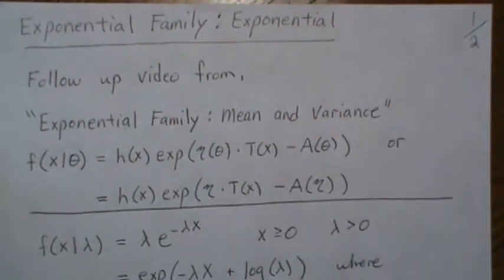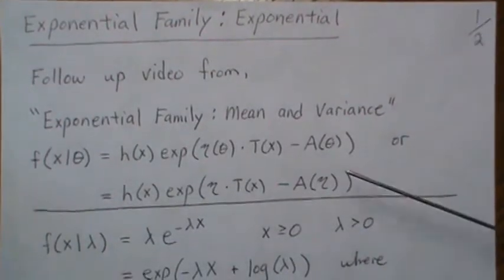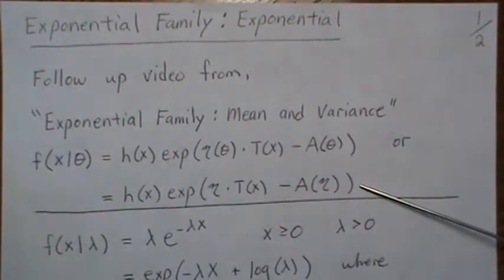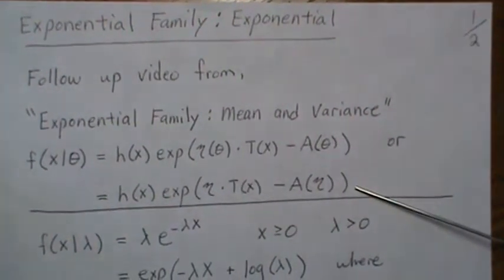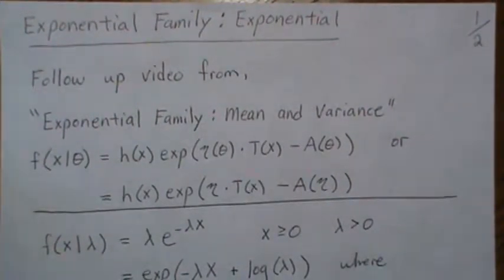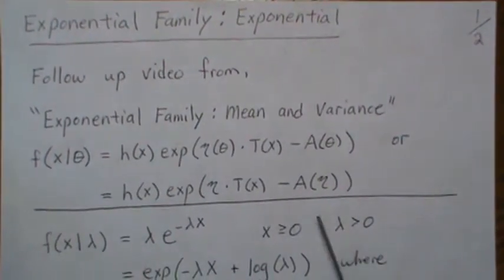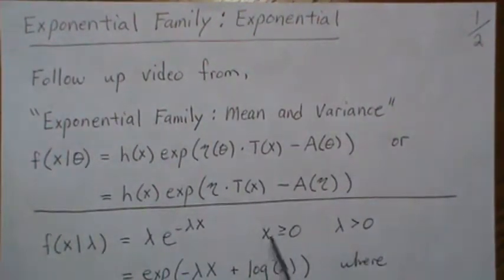We showed that if you could put it in one of these two forms it's considered part of the exponential family, but it's the second form which we call the canonical form that helps us out when we're finding the mean and the variance or any moment from our sufficient statistic. So let's see how the exponential distribution fits into this.